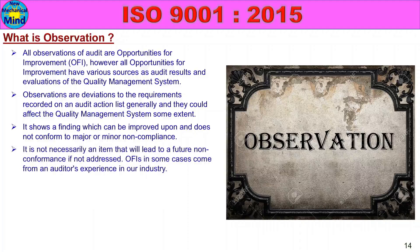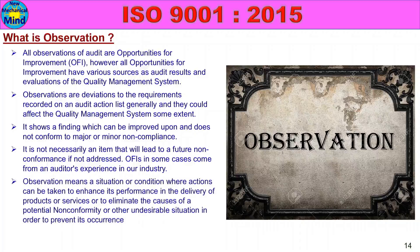An observation is not necessarily an item that will lead to a future non-conformance if not addressed. Opportunities for improvement points in some cases come from an auditor's experience in the industry. Observation means a situation or condition where actions can be taken to enhance performance in delivery of products or services, or to eliminate the causes of a potential non-conformity in order to prevent its occurrence.